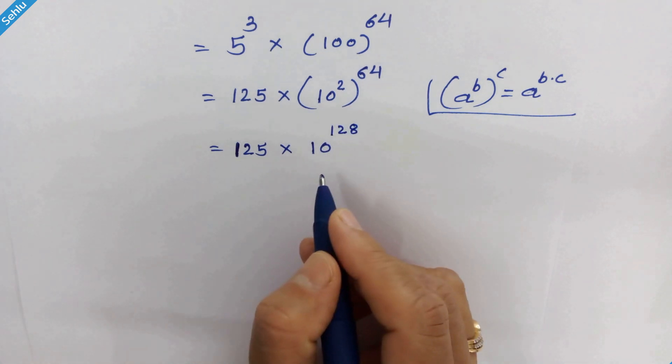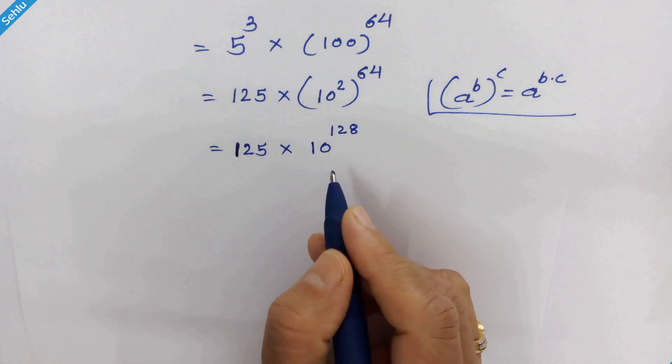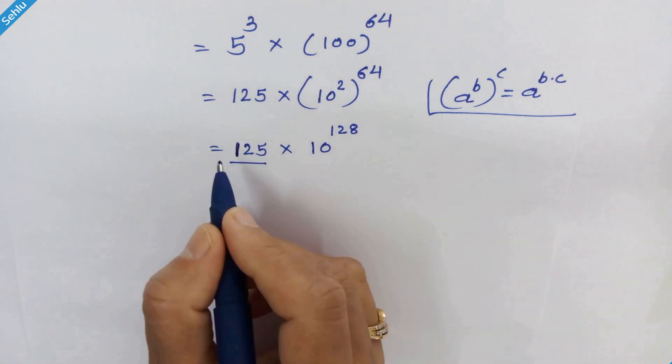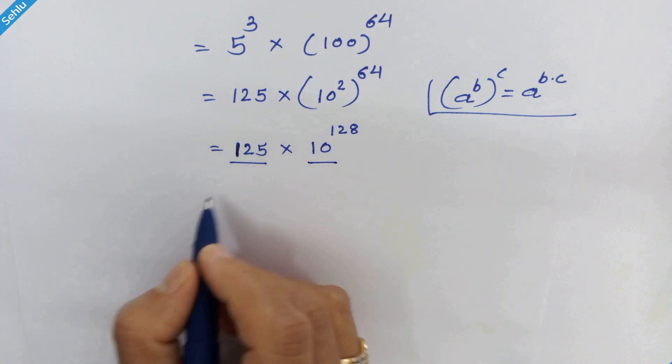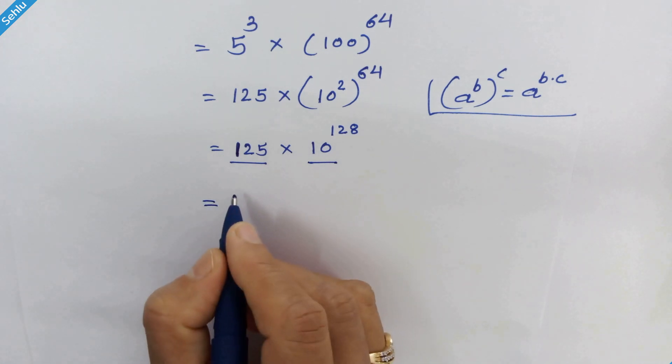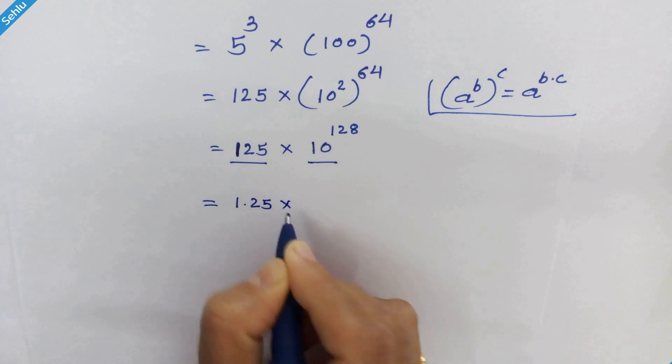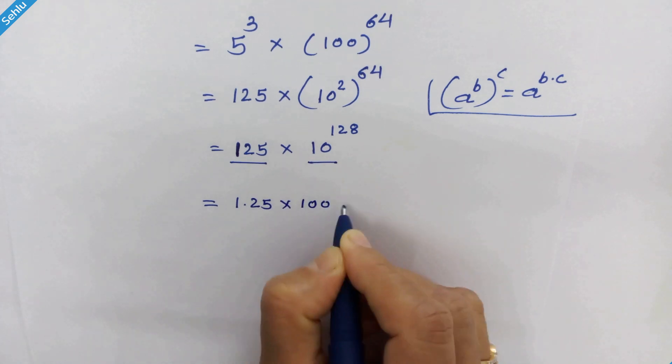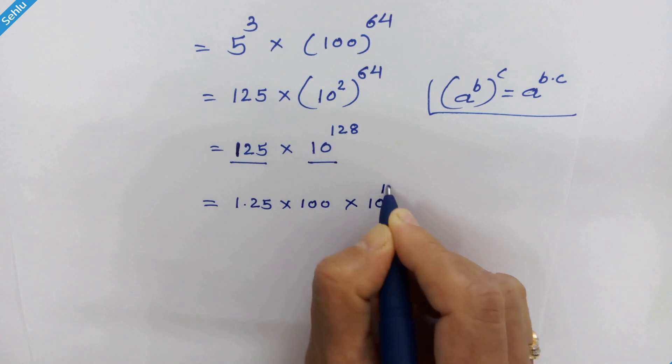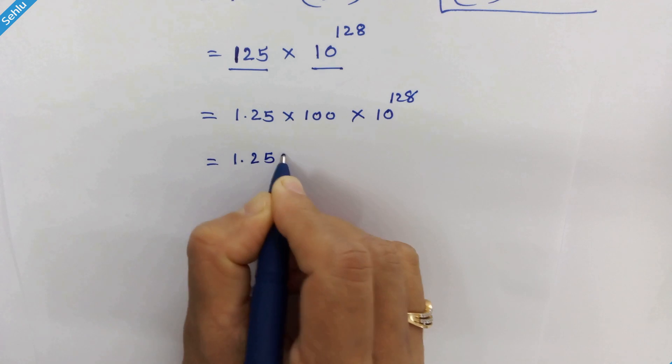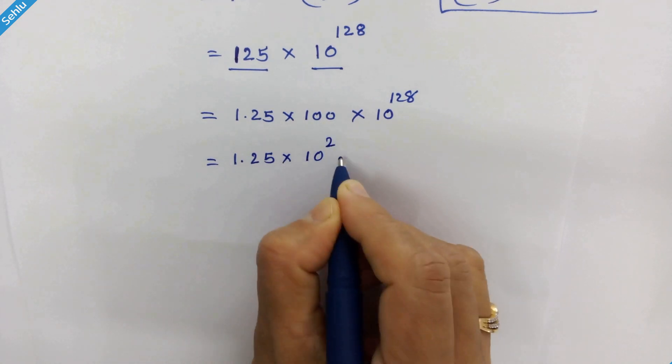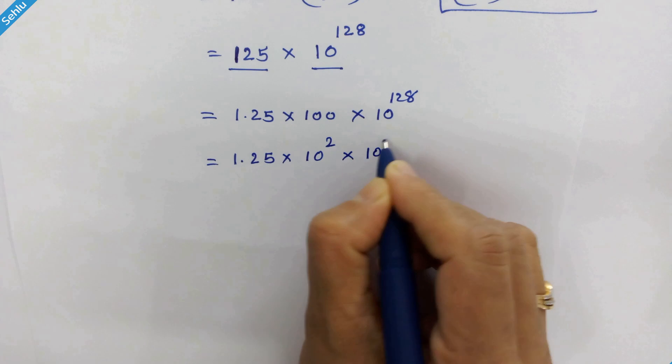Now let's convert this expression into scientific notation. For that, this part must be greater or equal to 1 and smaller than 10. And this part can be 10 with any integer as an exponent. So 125 is greater than 10, so we can write 1.25 times 100 times 10 raise to 128. 1.25 times 100 is 10 square times 10 raise to 128.